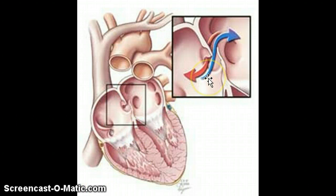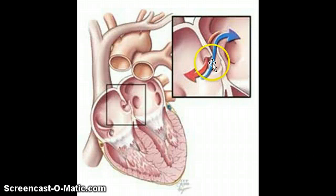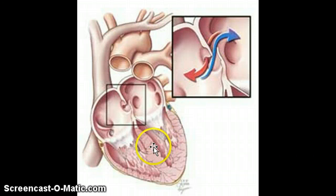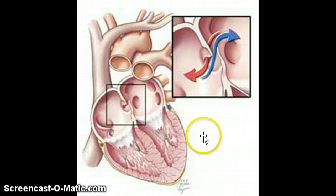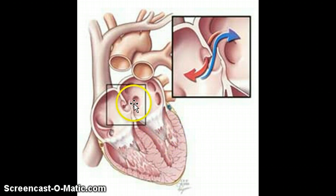When there is a patent foramen ovale — a foramen ovale that's open — that allows blood to shunt back and forth between the right and left atrium, and that causes all kinds of problems. A PFO closure device is a device that can be inserted in the cath lab.